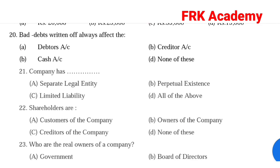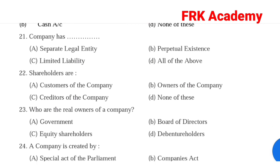A company has features: Option A: separate legal entity. Option B: perpetual existence. Option C: limited liability. Option D: all of the above. Answer: all of the above. Question: Shareholders are — owners of the company. Answer: Option B, owners of the company.